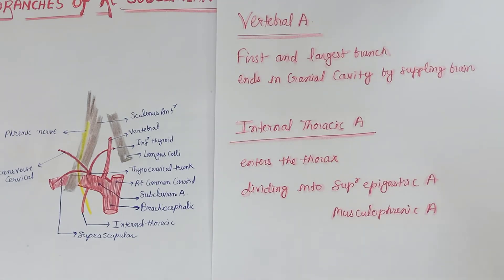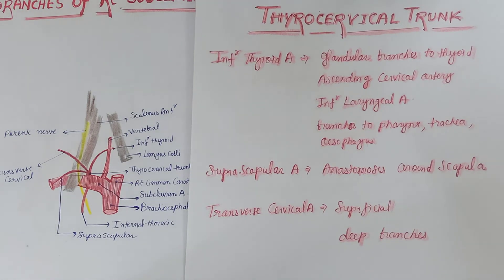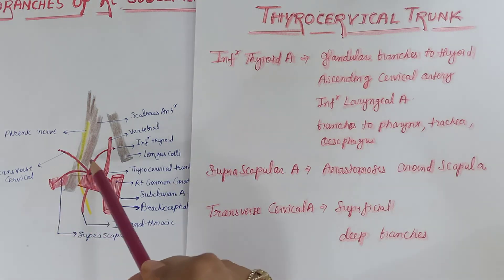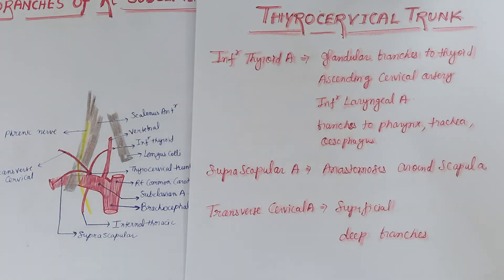The next branch of the subclavian artery is the thyrocervical trunk — a short, wide vessel arising from the front of the first part of the subclavian artery, close to the medial border of scalenus anterior, and between the phrenic and vagus nerves. It divides into the inferior thyroid, transverse cervical, and suprascapular arteries.